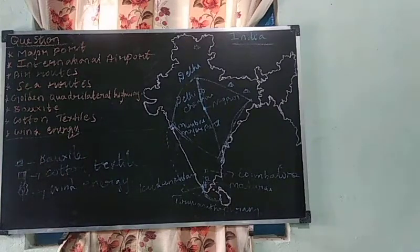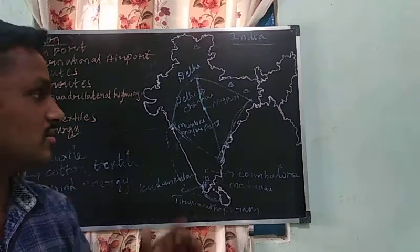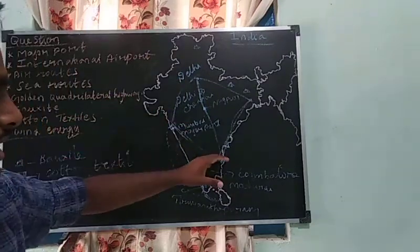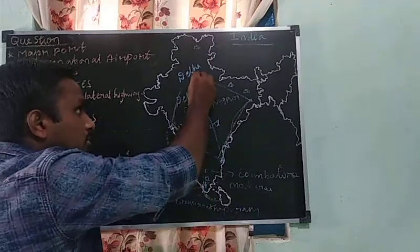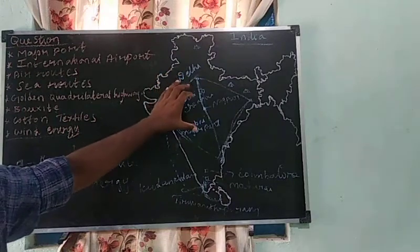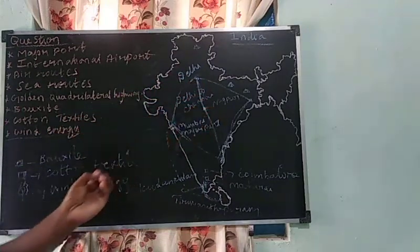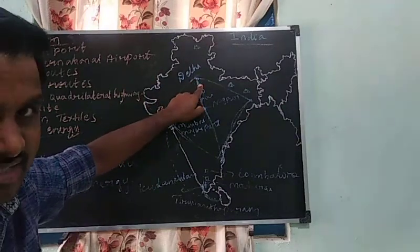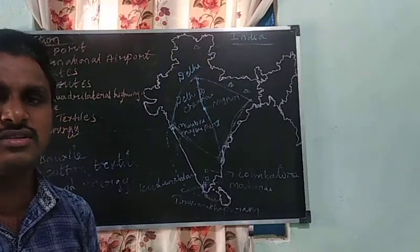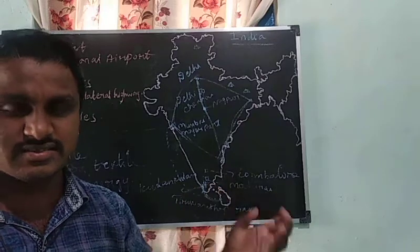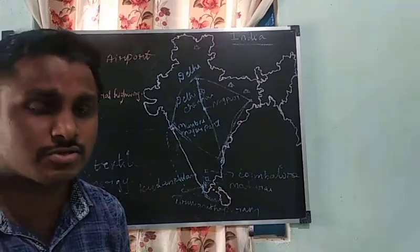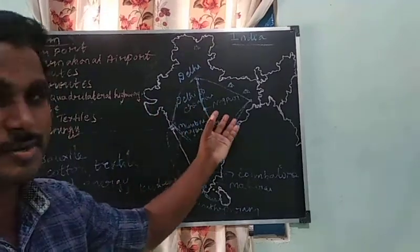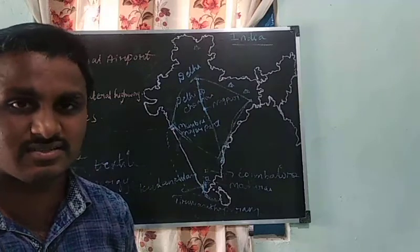You can mention places outside the map also. This is an 8-mark question. For the map, you can give a dot and mention the places. This is the geography map section. Practice well — practice makes perfect. Without practice you cannot mark the places, so take practice well and do well.